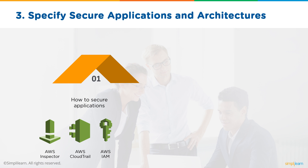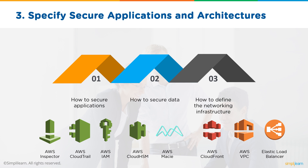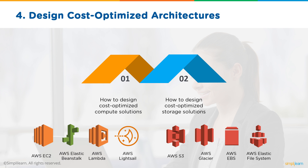The third domain — specifying secure applications and architectures — requires knowing how to secure applications using AWS Inspector, AWS CloudTrail, and AWS IAM; how to secure data using CloudHSM and AWS Macie; and how to define the networking infrastructure using CloudFront, VPC, and Elastic Load Balancer. The fourth domain — designing cost-optimized architectures — covers designing cost-optimized compute solutions using AWS EC2, Elastic Beanstalk, Lambda, and AWS LightSail, as well as cost-optimized storage solutions using AWS S3, Glacier, EBS, and Elastic File System.